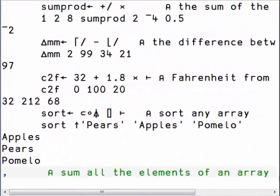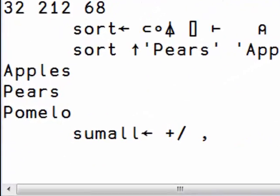We want to sum all the elements of an array. This is an ATOP, the sum of the ravel.